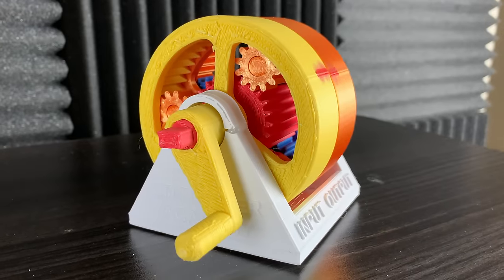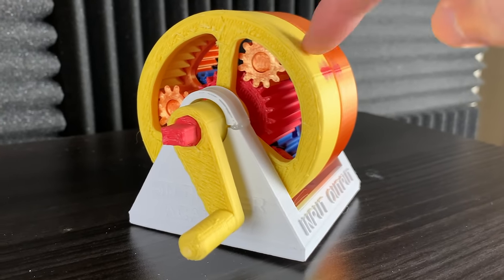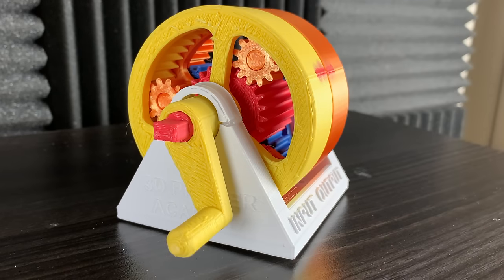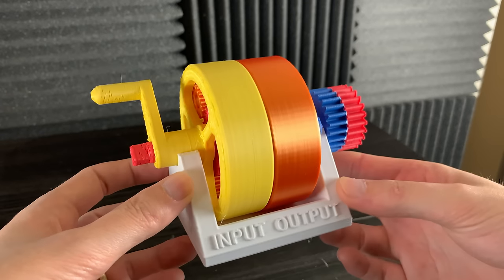This automatic transmission model contains two planetary gear sets that share the same sun gear. Let's take it apart so we can see what's inside.